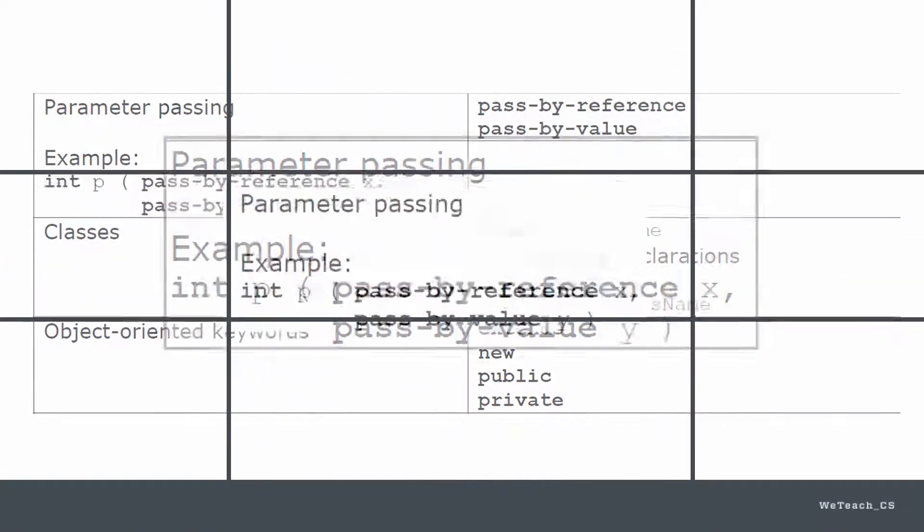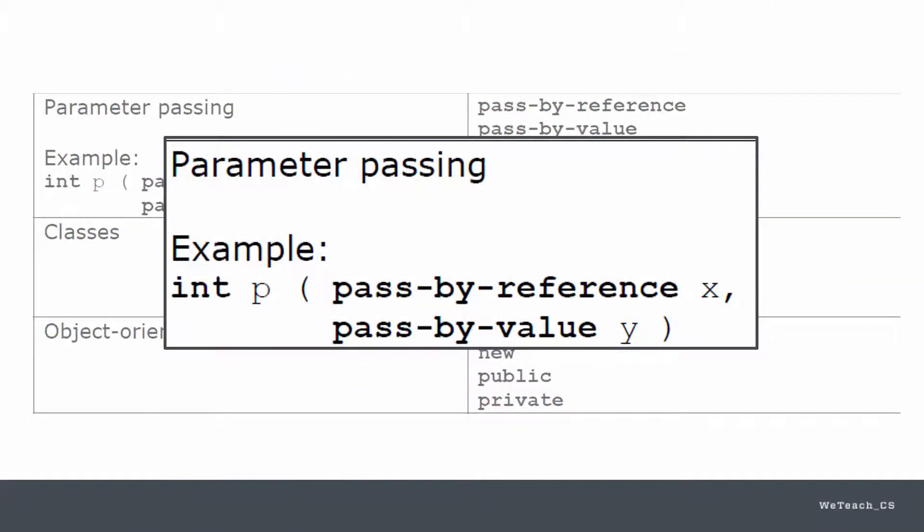Procedures, functions, and methods often receive information through parameters, which are the variables you see inside parentheses. Parameters are an important aspect of programming, and you need to be sure you have a good understanding of how they work.